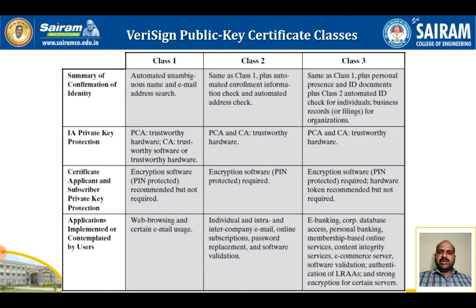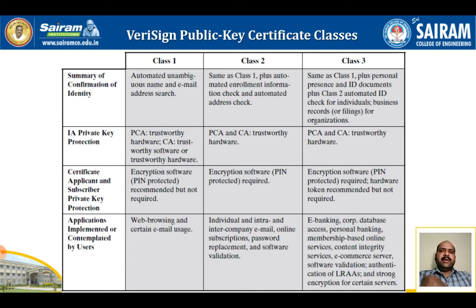For class one digital IDs, VeriSign confirms the user's email address by sending a PIN and digital ID pickup information to the email address provided in the application. For class two digital IDs, VeriSign verifies the information in the application through an automated comparison with a customer database, in addition to performing all of the class one checks. A confirmation is also sent to the specified postal address.